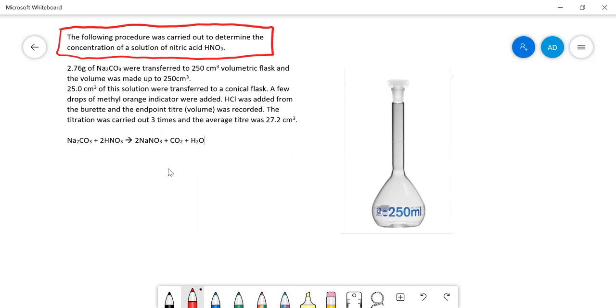What you'd get is 2.76 grams of sodium carbonate transferred to a 250 volumetric flask. Now we've never used a volumetric flask before, but this is a volumetric flask, and you will be using these next year.